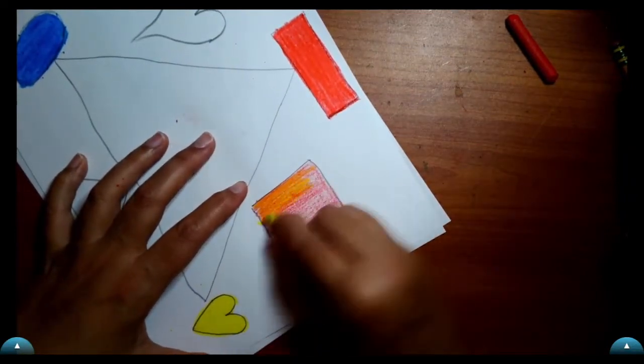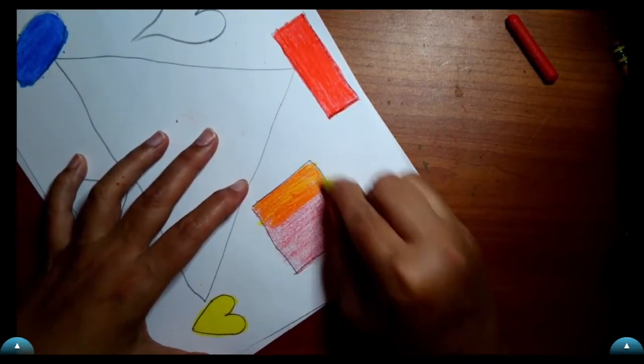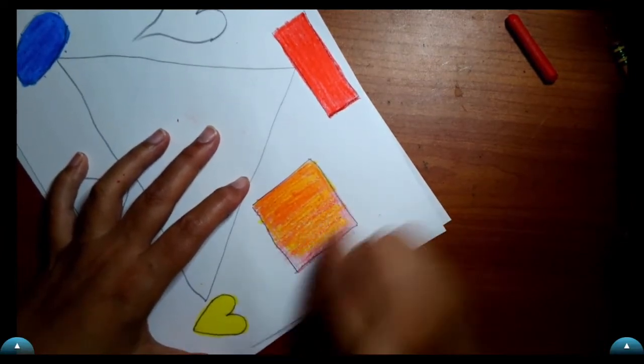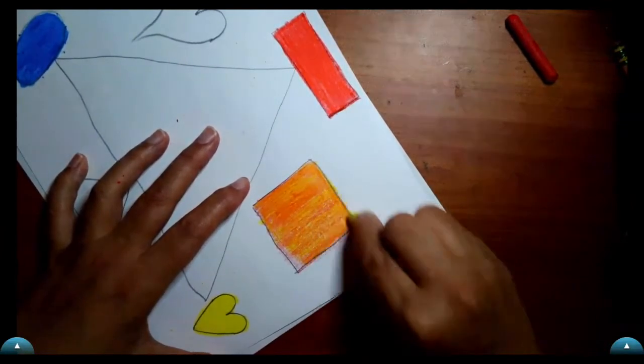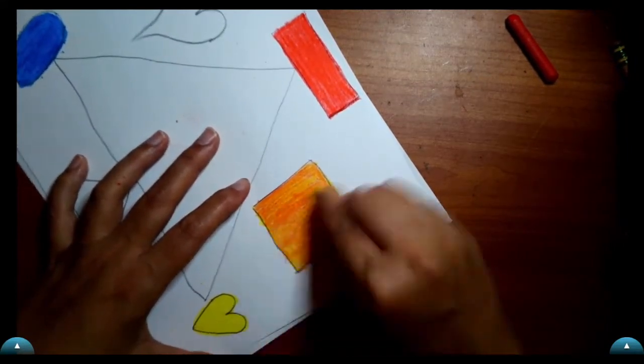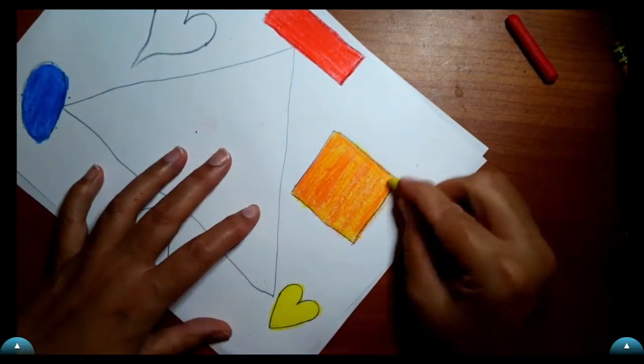And now we're going to put yellow on top of our red. But we are going to press hard with the yellow. When we do that, we make the secondary color orange. Yay!